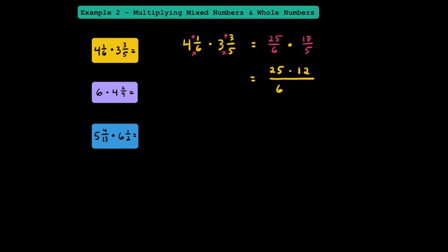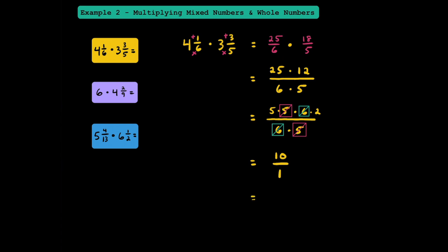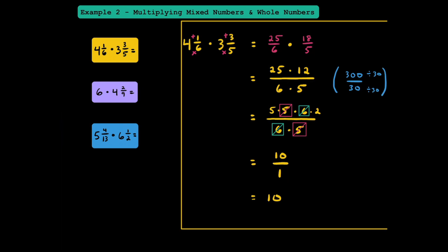Now let's rewrite our multiplication problem with just one fraction bar. We have 25 times 18 over 6 times 5. Before the numbers get too big, I'll break 25 into 5 times 5, and break 18 into 6 times 2, leaving 6 times 5 in the denominator. We have a 6 in both numerator and denominator — they cancel out. Similarly, 5 over 5 is 1 whole and they cancel as well. Multiplying 5 times 2 in the numerator gives 10, with a denominator of 1. So 10 over 1 simplifies to just 10 wholes. Breaking down numbers before multiplying saves time from simplifying large numbers.